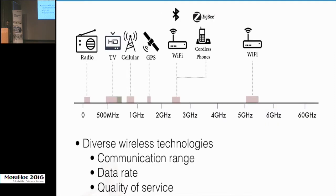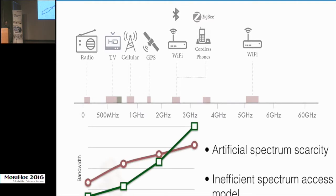Several diverse wireless technologies use the wireless spectrum for communication, ranging from radios that broadcast over a few hundred kilometers to personal area networks with a coverage area of a few meters. Equally diverse are the requirements for data rate and quality of service. Recently, the demand for wireless spectrum is growing at a much higher rate than the capacity available, and it is now well understood that this is an artificial spectrum scarcity.